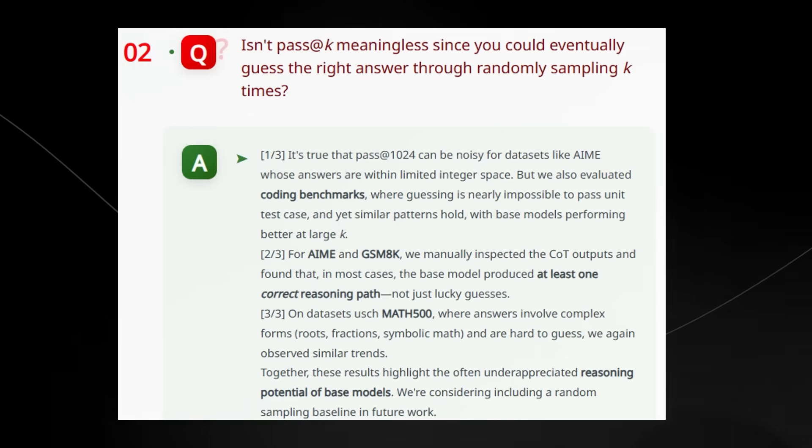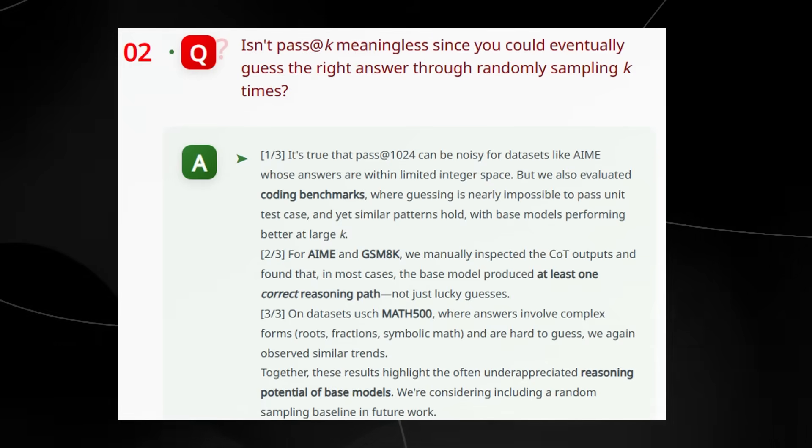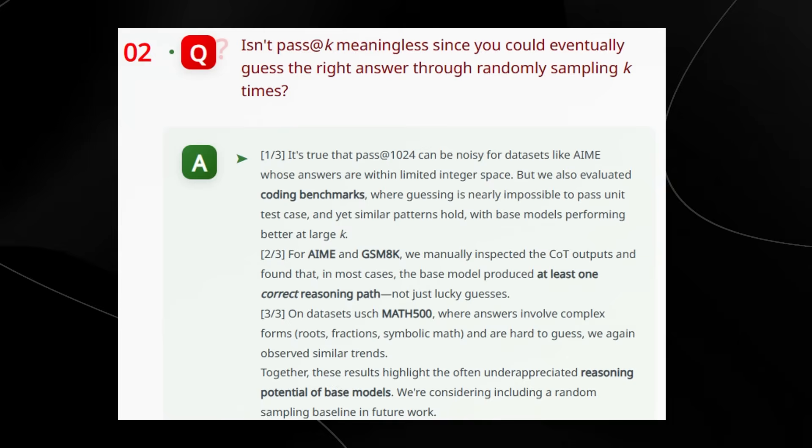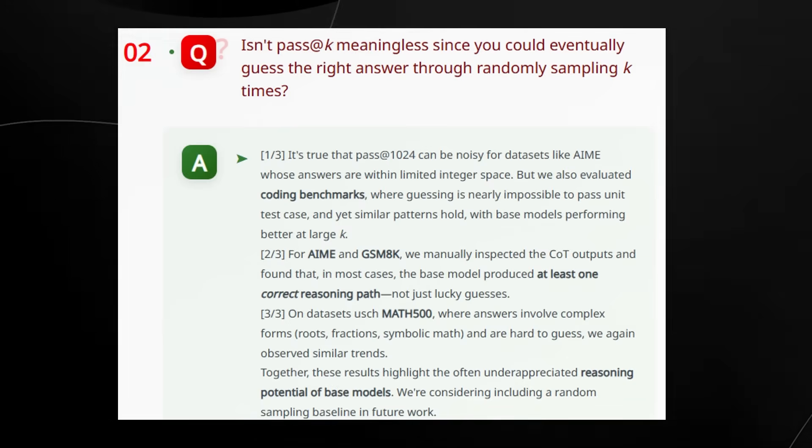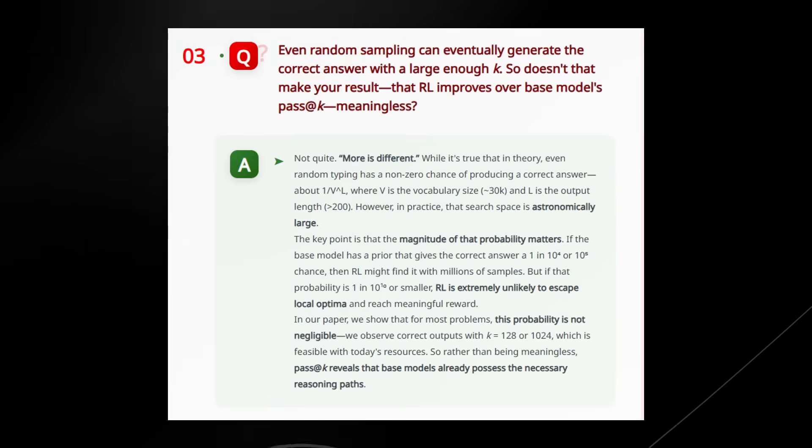Basically stating that, look, of course you could predict that if the model guesses randomly, eventually it would get it right, so this doesn't count. But that's not the case because a lot of these answers are really specific, and basically this just shows that it wasn't just random, but buried skill that shows up with more chances.